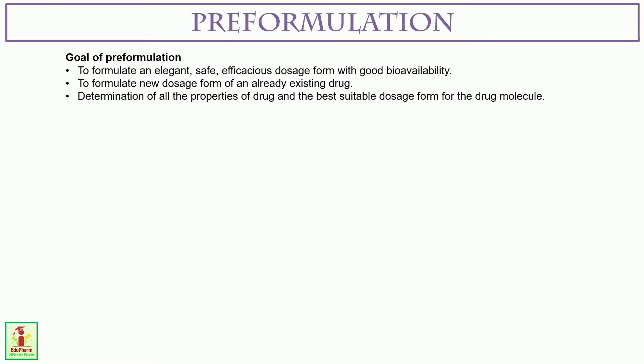What are the goals of pre-formulation? To formulate an elegant, safe, efficacious dosage form with good bioavailability is the fundamental goal. Then to formulate a new dosage form of an already existing drug. And determination of all the properties of the drug and the best suitable dosage form for the drug molecule. These three points are the main goals of pre-formulation studies.